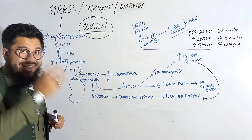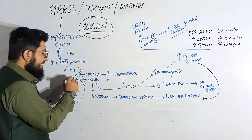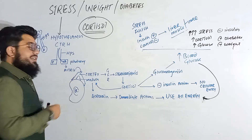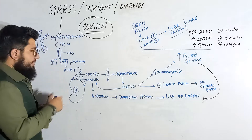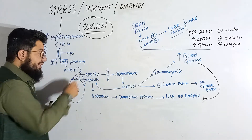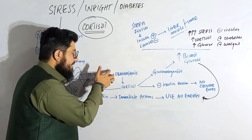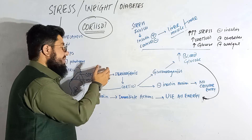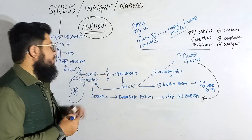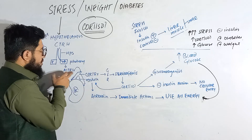The adrenal is a gland located on the renal system — on top of our kidneys. This adrenal gland has two portions: the cortex and the medulla. The cortex is further divided into three layers: zona glomerulosa, zona fasciculata, and zona reticularis.